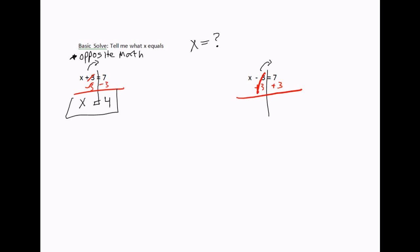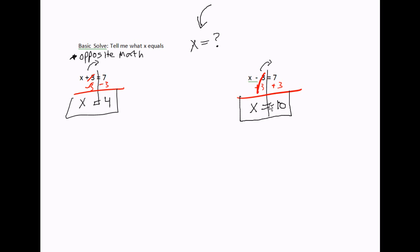So I'm going to add three to both sides. Three minus three is zero. On the left side I have x by itself, and that's the goal — x by itself. x equals whatever is on the right-hand side: seven plus three is ten. So x equals ten.